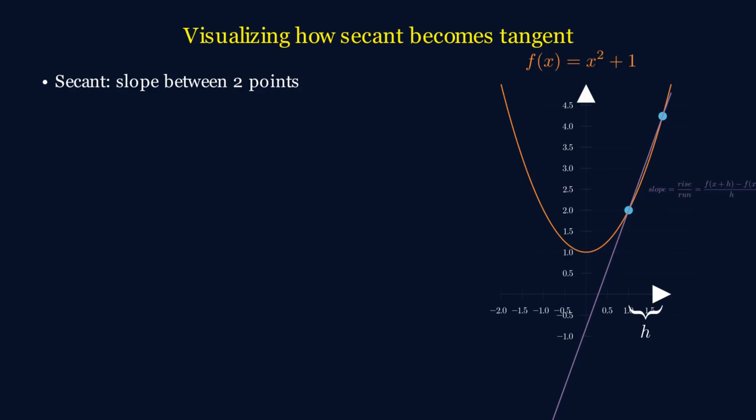But a tangent line is a little different. Instead of using two points, it gives us the slope at a single point. That's called the instantaneous rate of change.